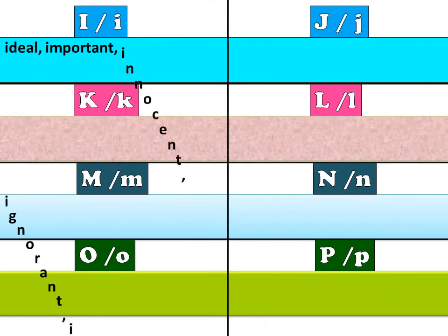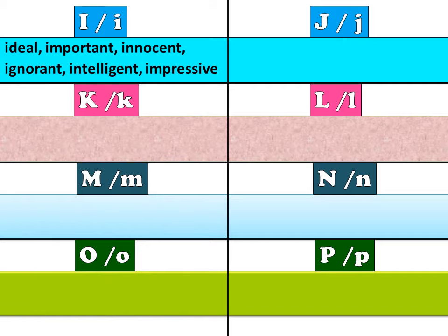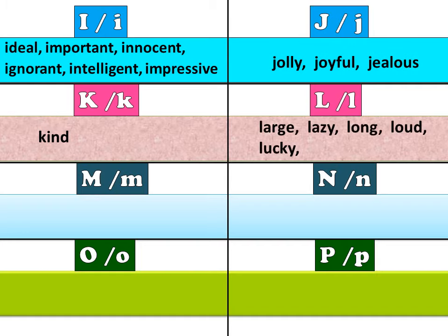I includes: ideal, important, innocent, ignorant, intelligent, impressive. J includes: jolly, joyful, jealous. K: kind. L: large, lazy, long, loud, lucky.